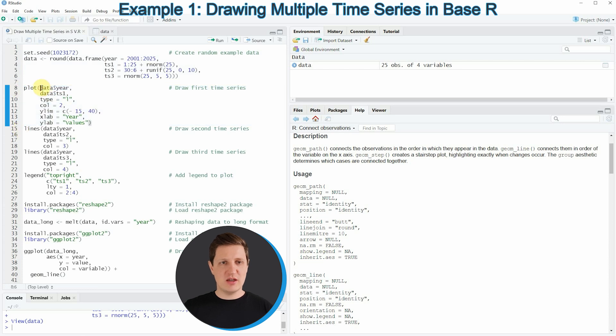Within the plot function I'm specifying our year column and the first time series of our data which is called TS1. Then I'm also specifying different options within the plot function such as the type argument to be equal to a line, the color, the ylim, the xlab and the ylab.